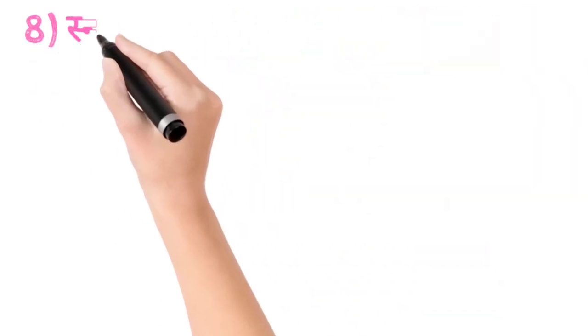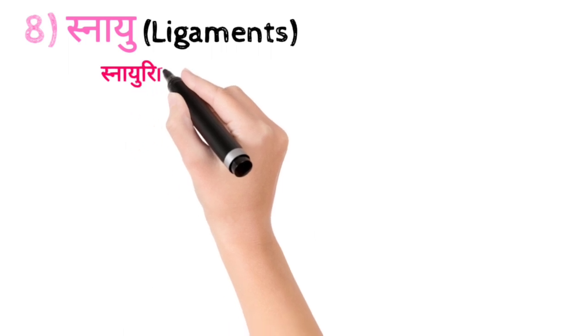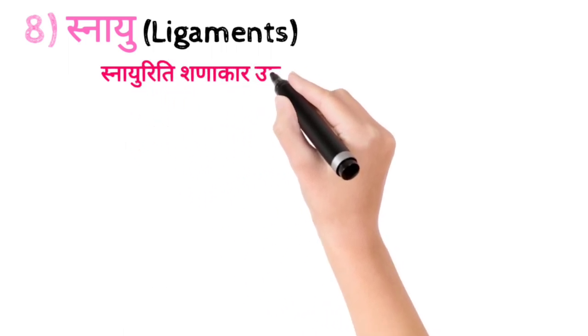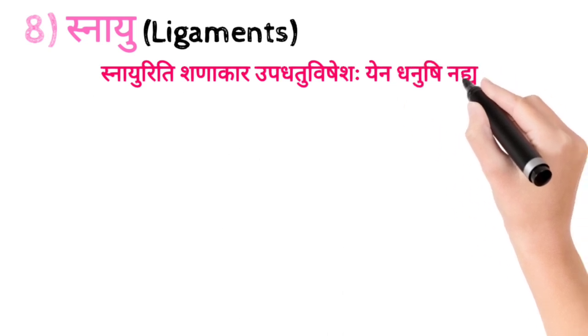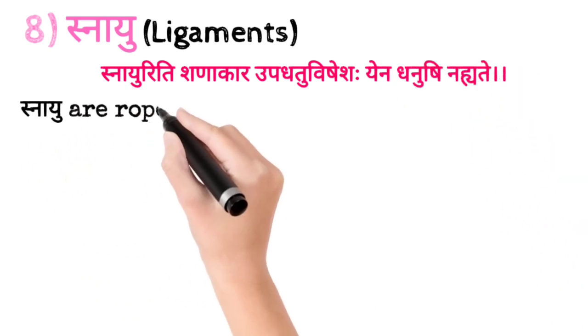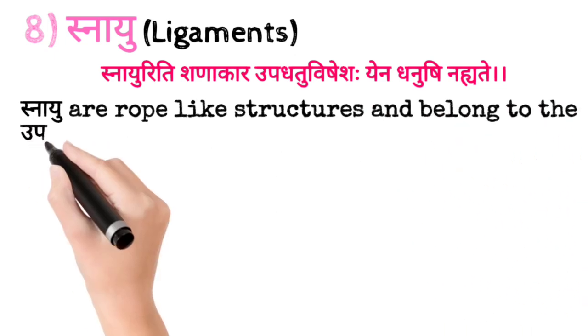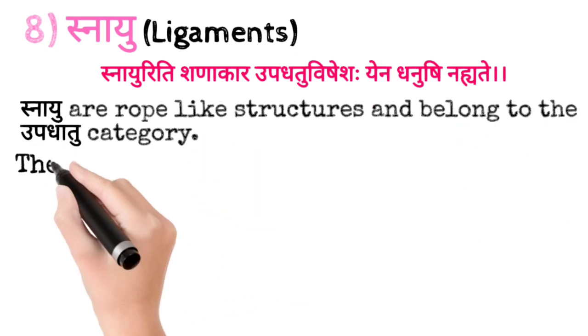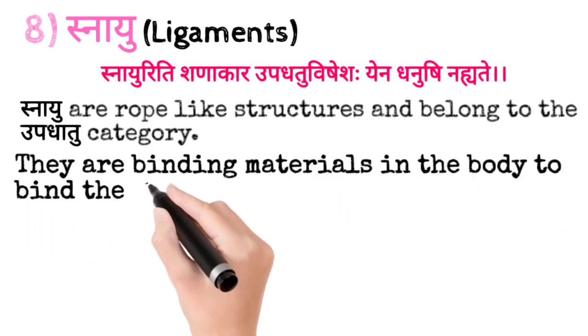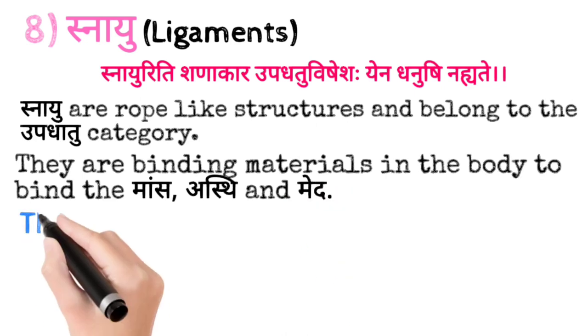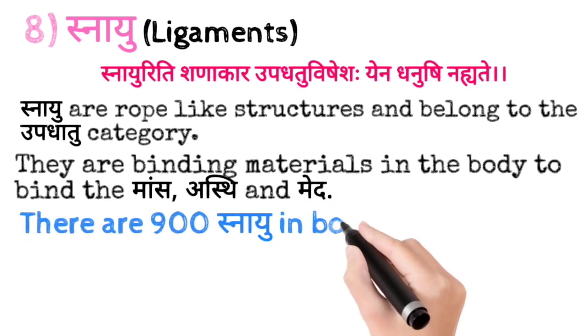Students, ab padhte hain Snayu ke bare mein jo hote hain ligaments. Snayu riti shnaakar upadhatu vishesh yena dhanushi nahaaye. Snayu kya hote hain? Rope-like structures hote hain. Yeh belong karte hain upadhatu ki category se. Yeh binding materials hote hain body ke jo Mass, Asthi aur Meda ko bind karte hain. Aur Snayu jo hain wo 900 hote hain body mein.